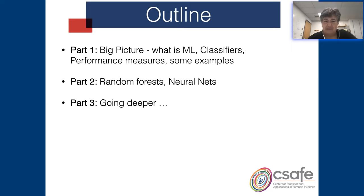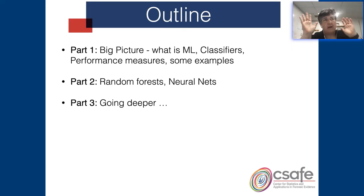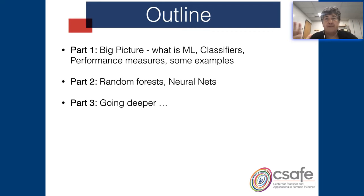So the outline: for today we want to work on the big picture — what is machine learning, what are classifiers, how can we evaluate how these classifiers are doing, and then I want to show a couple of examples. Next time we want to go a little more technical: trees, greedy algorithms, random forests, neural nets. And for the third part, I want to go deeper into our deep neural network activities — specifically convolutional neural networks.